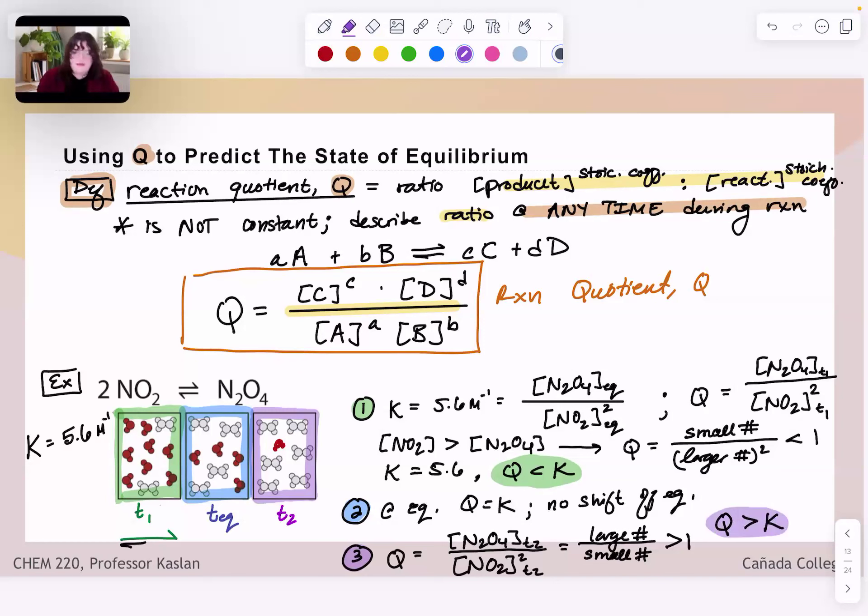And if we have this truth here, we need to ask ourselves how we can get from a reaction quotient where we've got this large number up here and small number down here creating a Q that is bigger than K. So how is it that we can get this reaction quotient to lower? How do we get back to Q equals K?